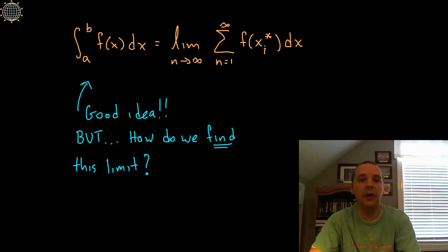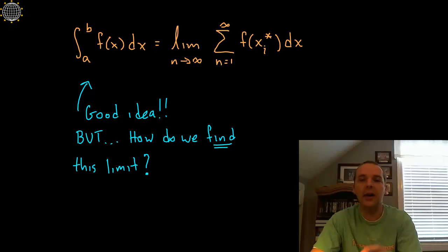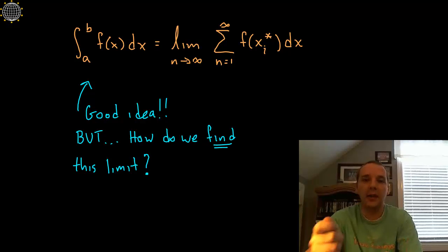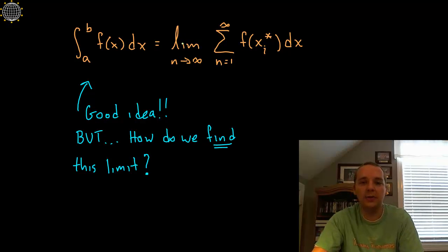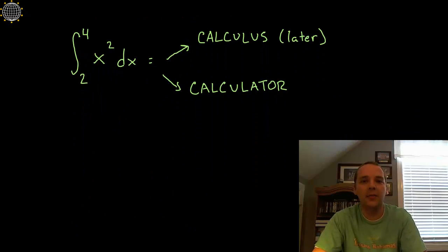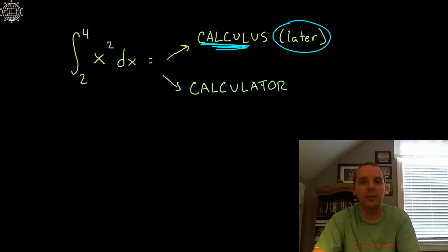You might ask: okay, I get it — you take more and more rectangles and it converges to the actual area — but how do you actually do this? If somebody handed you a function and said find the exact area under the curve, what do you do? You can't physically take more and more rectangles. You can find the area of 6 rectangles, maybe 60, but not 6,000 or 600,000. So how do you do this pencil and paper? I'm not going to answer that in this video, but I will show you one quick example using a calculator.